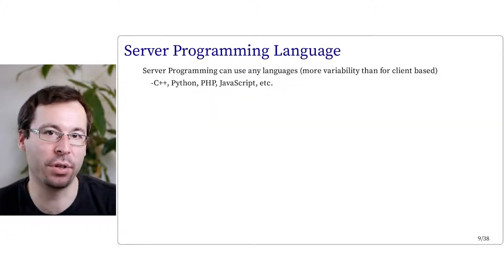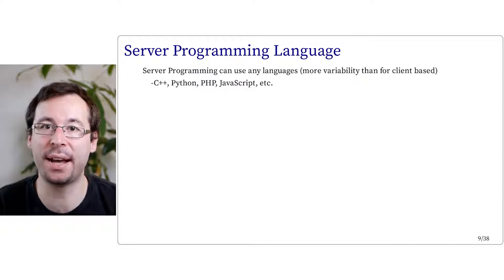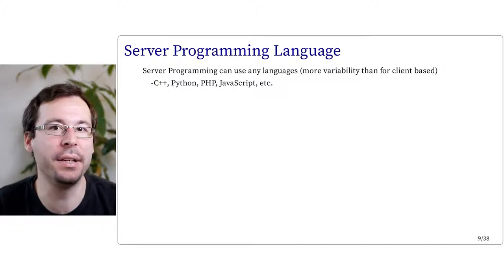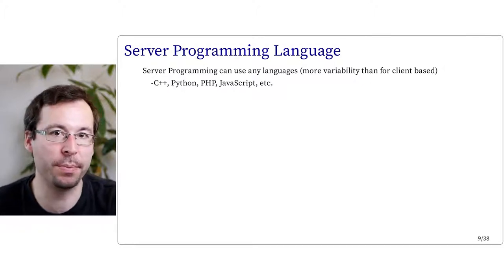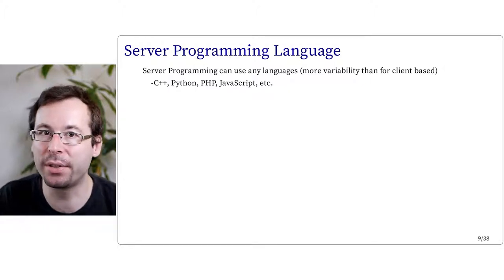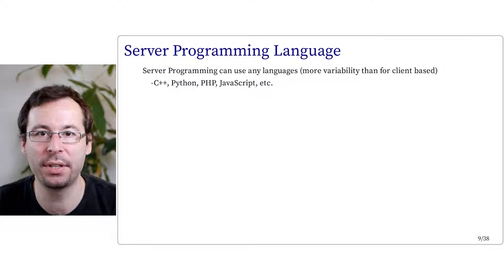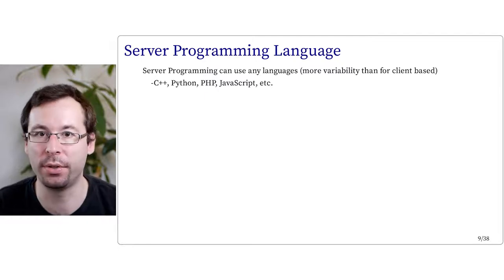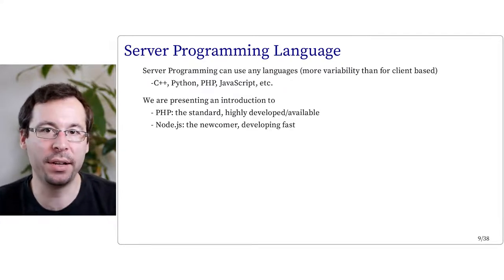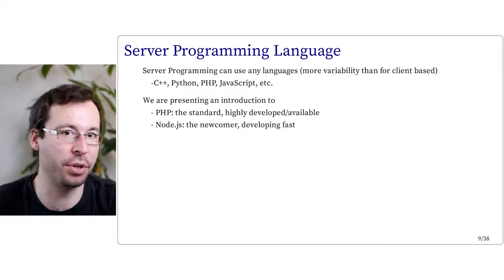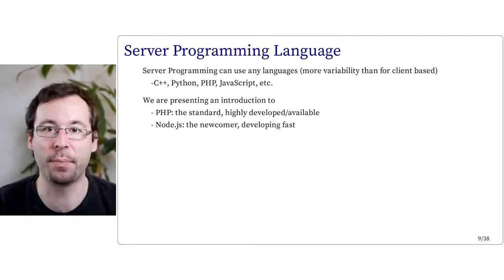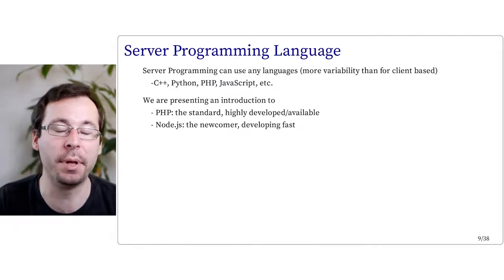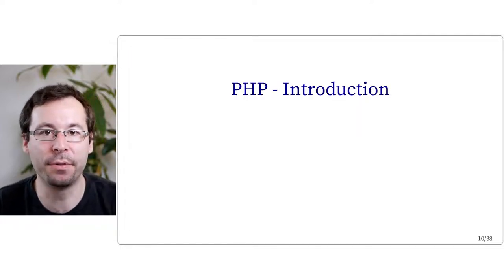One general thing to note is that while client-side programming languages are very specific — necessarily HTML, CSS, and JavaScript — server programming is much more open. Big servers use C++ for efficiency. There are common frameworks like Django that use Python. There is also PHP, a dedicated server programming language, and JavaScript as well. In this lecture, we are going to see only an introduction to PHP, which is the most standard and widely available language for server programming, as well as a short introduction to Node.js, which is more recent but developing fast.